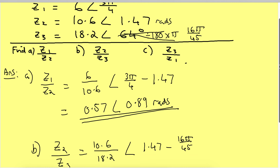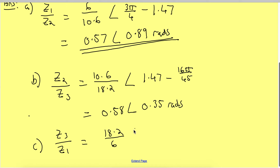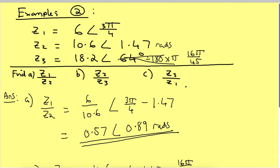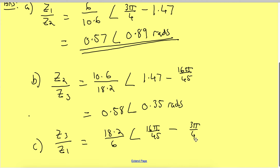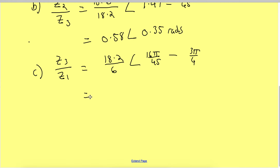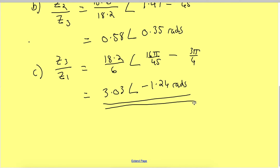Z3 that's 18.2 divided by 6 at an angle of 16π/45 take away 3π/4. Let's get a calculator and work that out. That gives me 3.03. Angle of 16π/45 take away 3π/4, which is negative 71π over 180, or negative 1.24. So either leave it as a fraction or put it as a decimal. That's how easy it is to multiply and divide complex numbers in polar form.